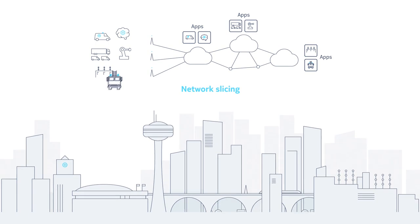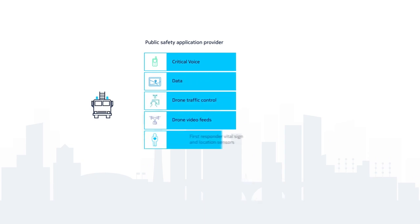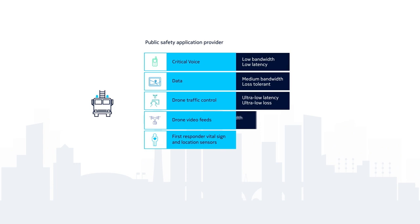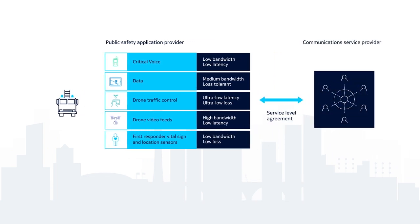But how does slicing work in practice? A target customer — for example, public safety — may require different applications, each with unique communication requirements. Together, these requirements form the Service Level Agreement, or SLA, between the customer and the CSP. The CSP will create a network slice based on the SLA.